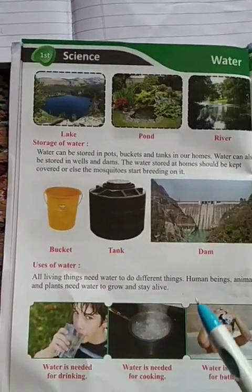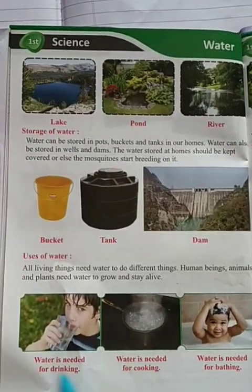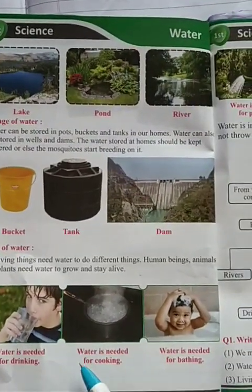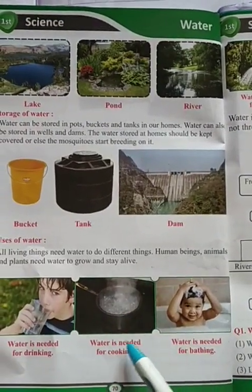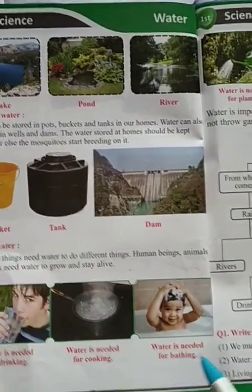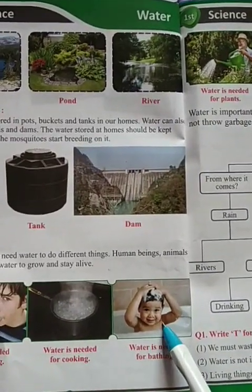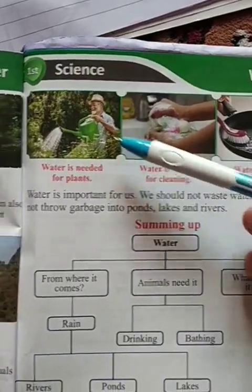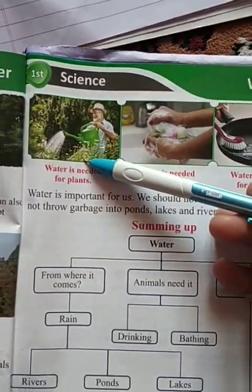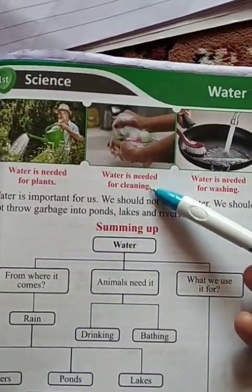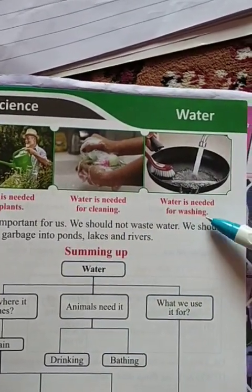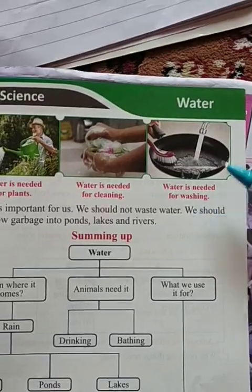Here are some pictures showing how water is needed. Water is needed for drinking, for cooking, for bathing, for plants — plants also need water — for cleaning, and for washing.